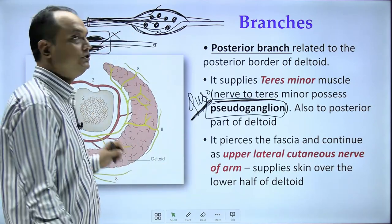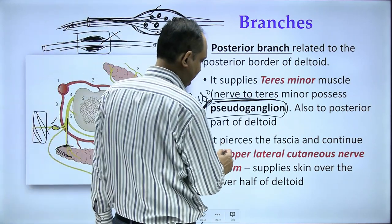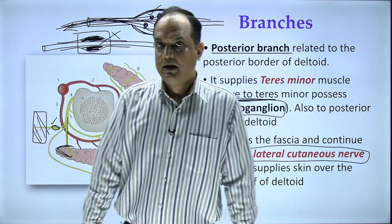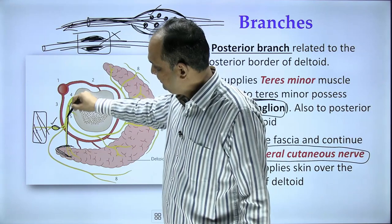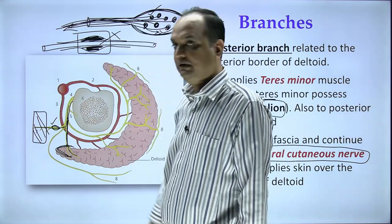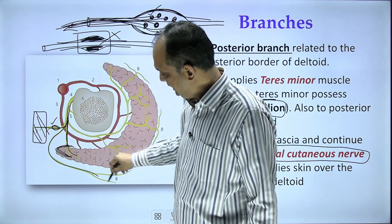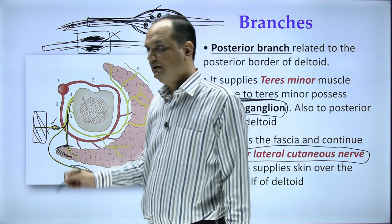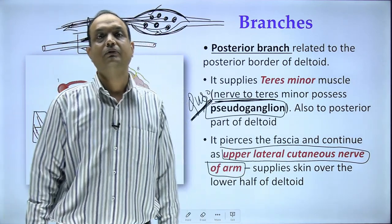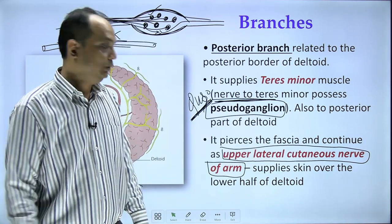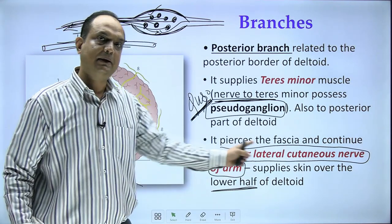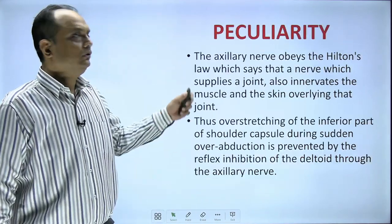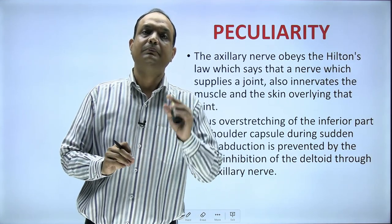The posterior branch also gives an important cutaneous supply: the upper lateral cutaneous nerve of the arm. The posterior branch supplies teres minor and the posterior part of the deltoid, then the major portion of the nerve pierces the deep fascia of the shoulder and enters the skin as the upper lateral cutaneous nerve of the arm. Notably, this nerve, despite being called 'upper,' supplies the skin over the lower half of the deltoid muscle.